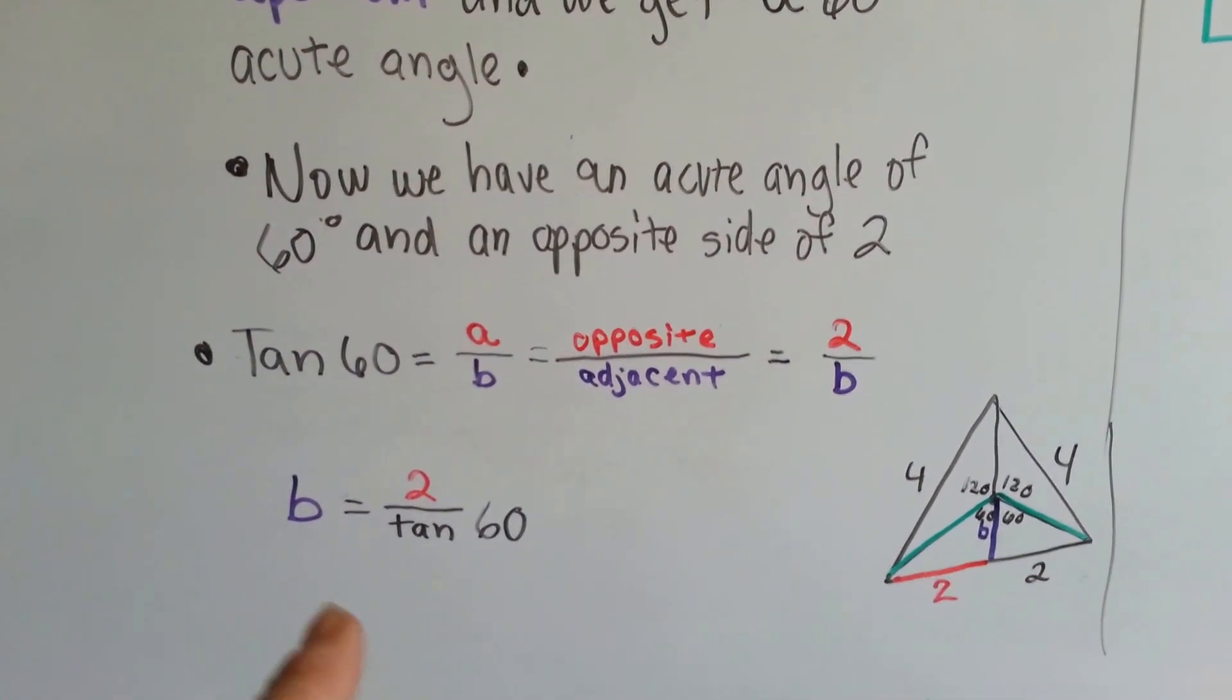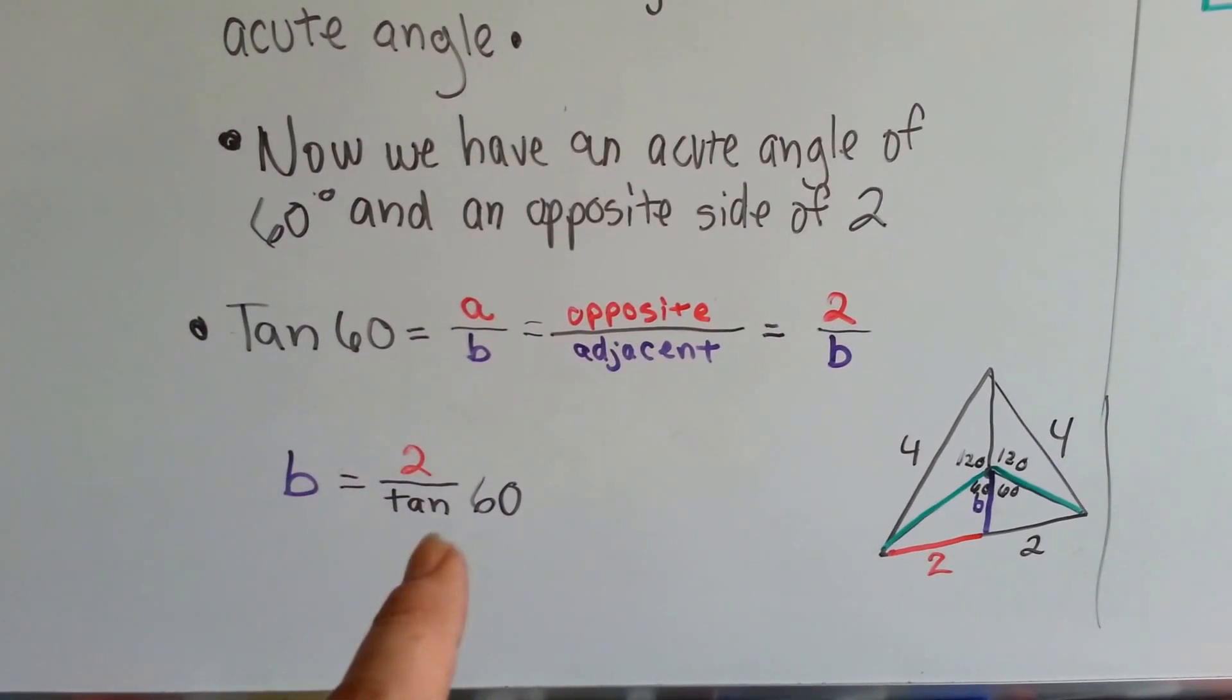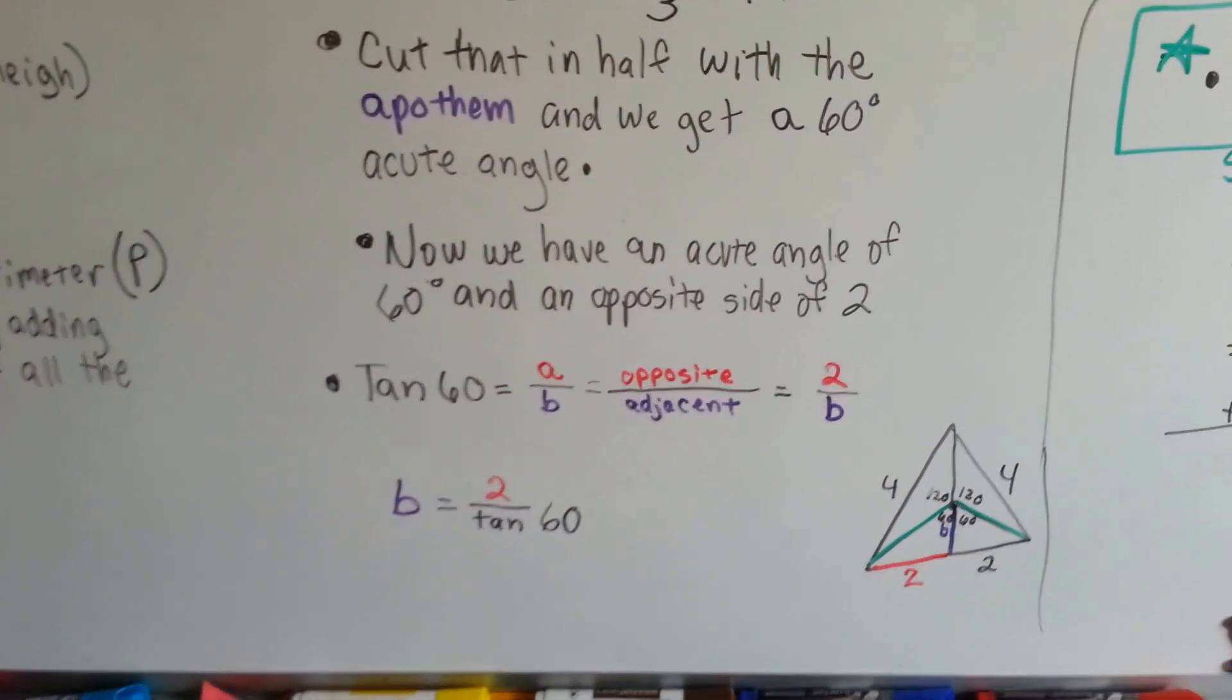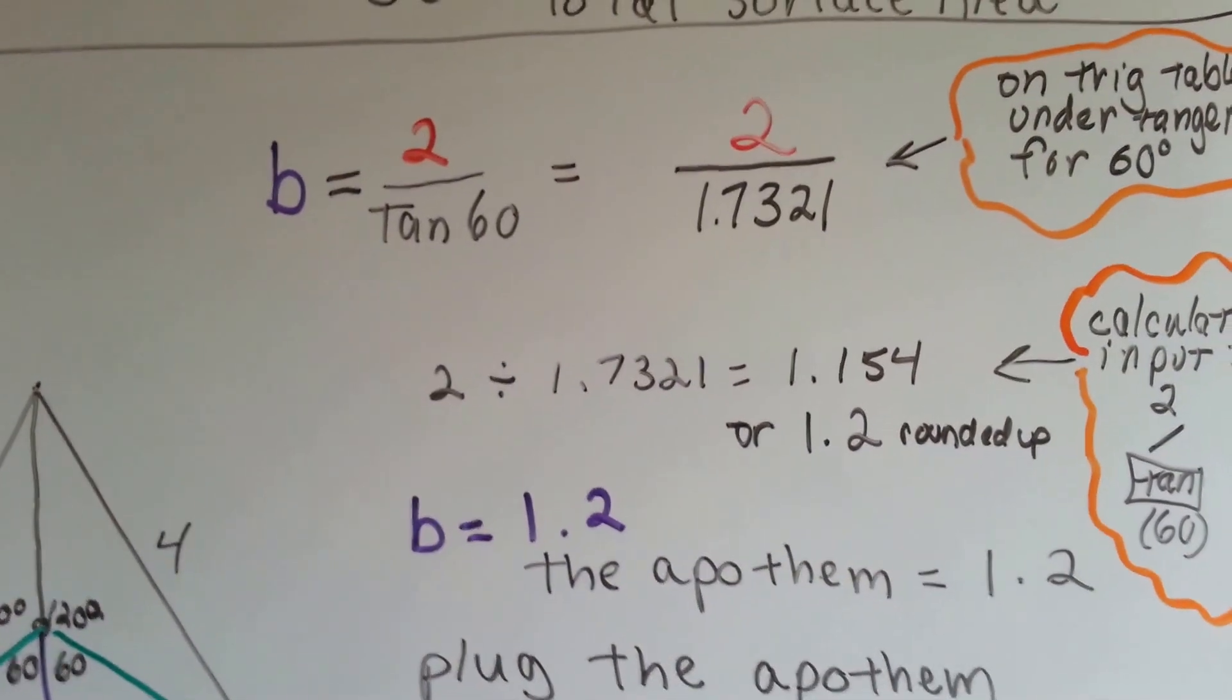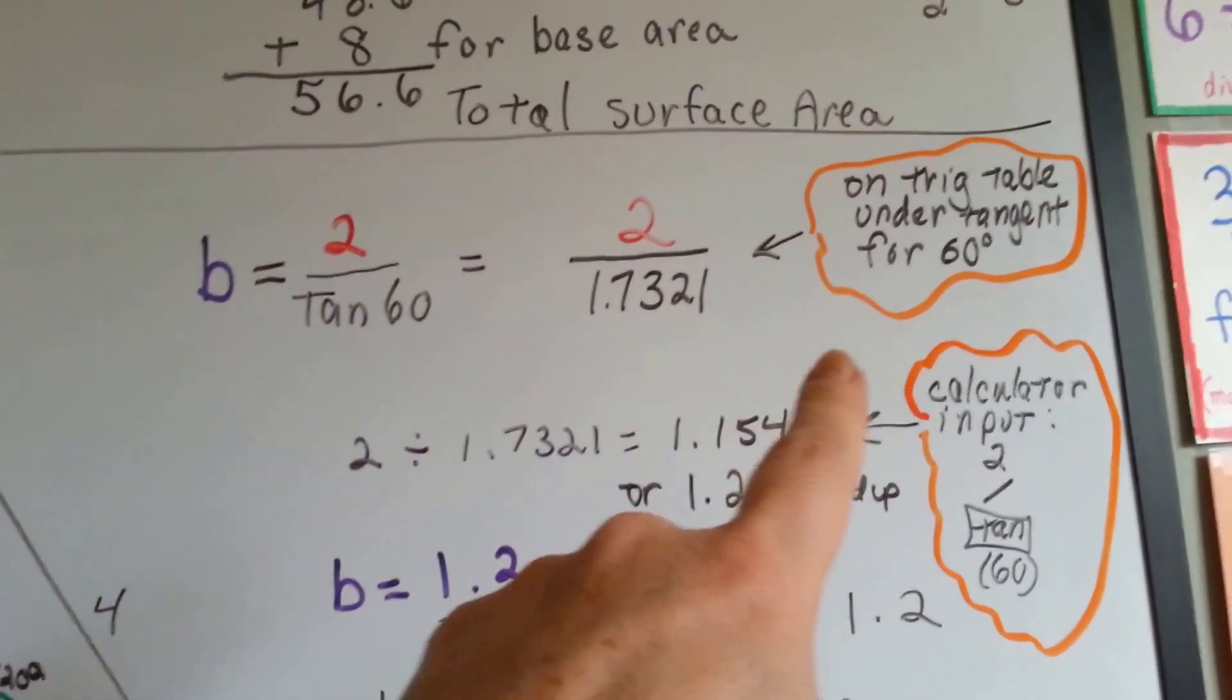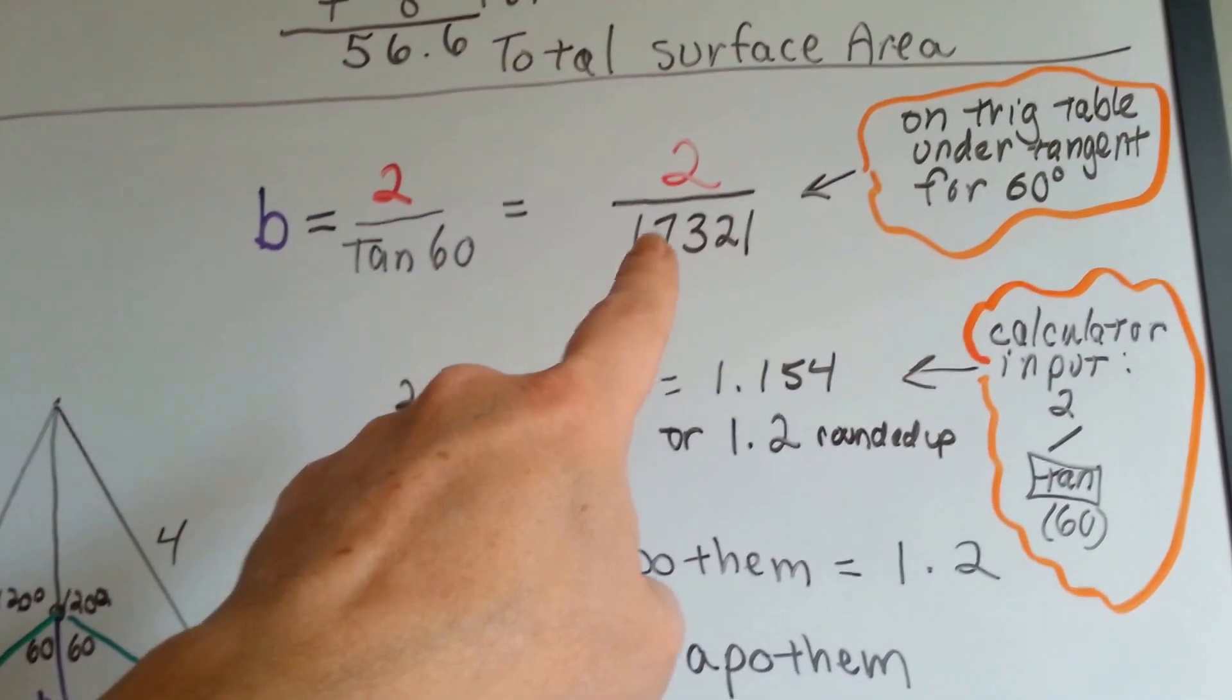So we rewrite it and say b is equal to 2 over tangent 60. So, now we're at 2 over tangent 60. What we do is we look on a trig table under the tangent column for 60 degrees and see where they meet up. And we see 1.7321.